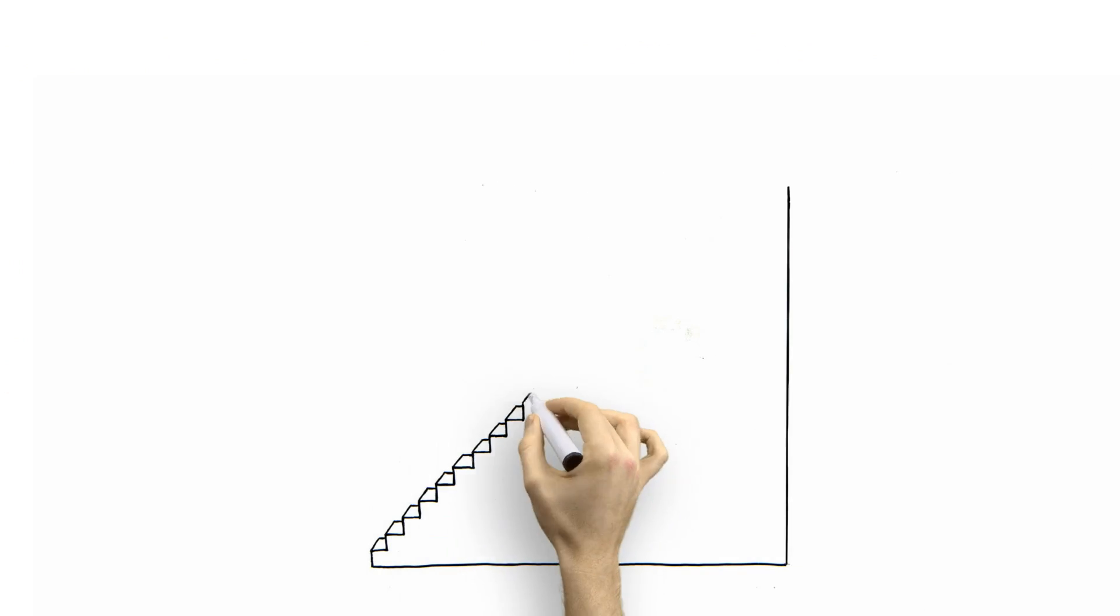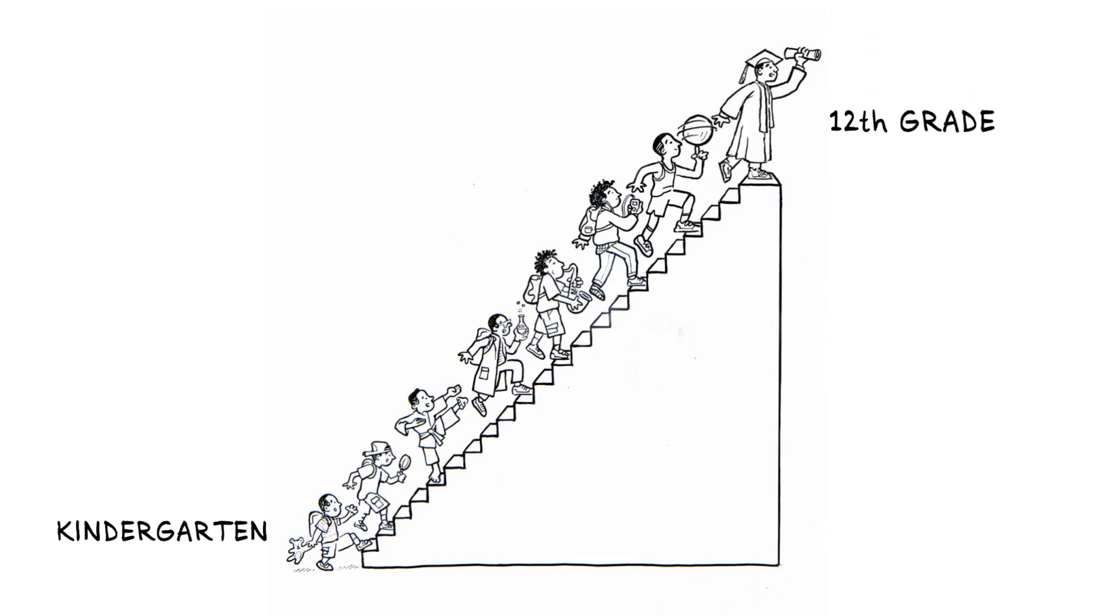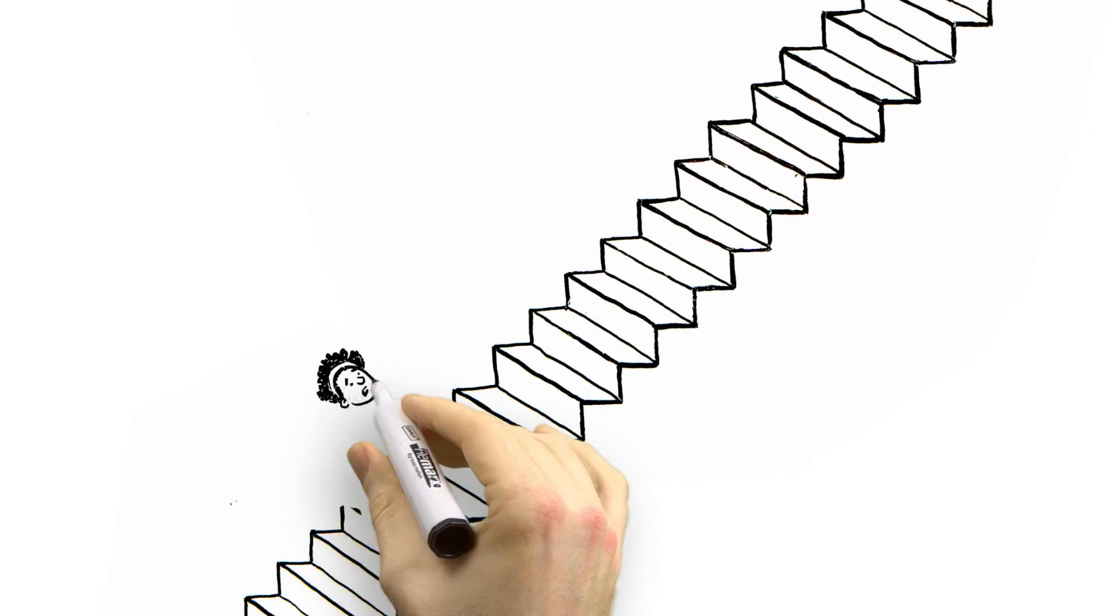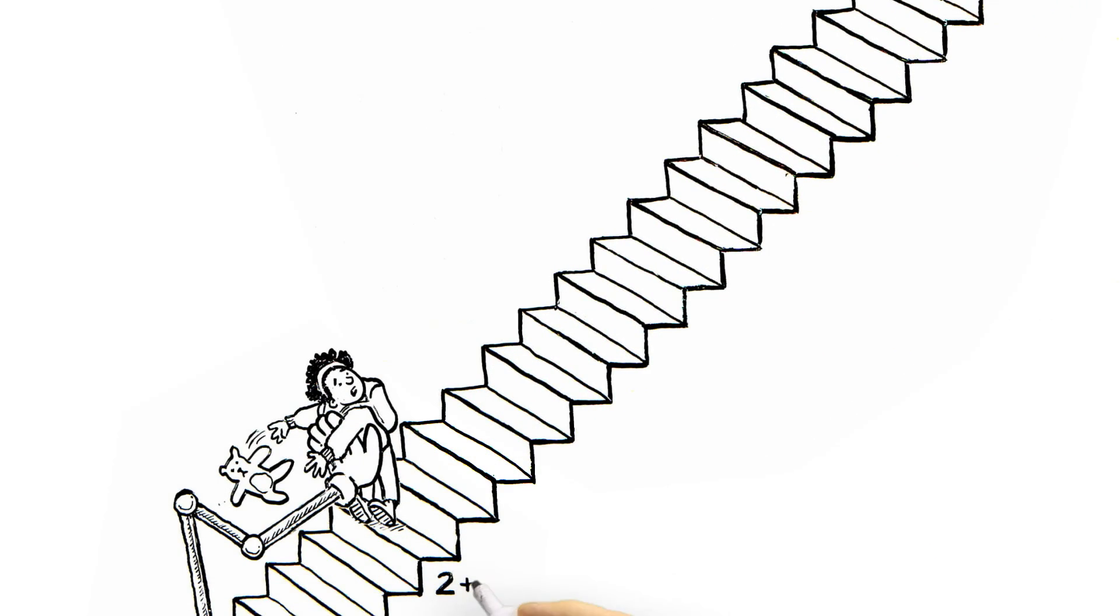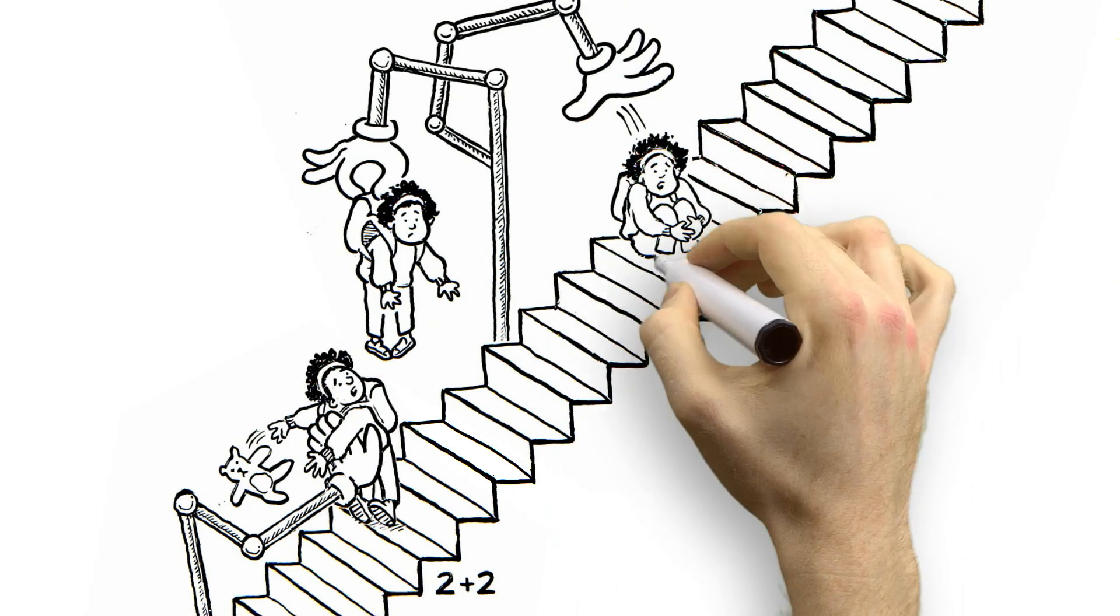You can think of kindergarten through 12th grade like a giant staircase. Each step is a skill your child needs to learn before stepping up to the next one. But right now, too many kids aren't really confident with 2 plus 2 before they have to move on to 2 times 2. We need more focus on the skills that help them move up the stairs or they can slip up and fall behind.